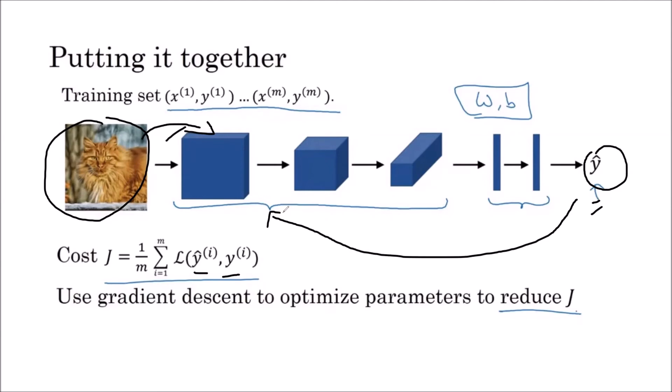Whenever we are changing the parameters of the filter, the loss is being minimized. When the loss becomes minima, at that time we will freeze the parameters. Then our network is trained. This trained network is ready for testing, at that time we can give any image for the testing.